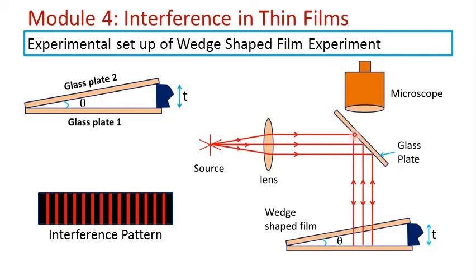These light rays are made to fall on a glass plate which is inclined at 45 degrees. Here partial reflection will occur and reflected light rays will be made to fall on the wedge shaped film in the normal direction. Partial refraction will also occur, so the transmitted light rays will go in this direction which are not utilized in our experiment. The reflected light rays will fall normally on the wedge shaped film.